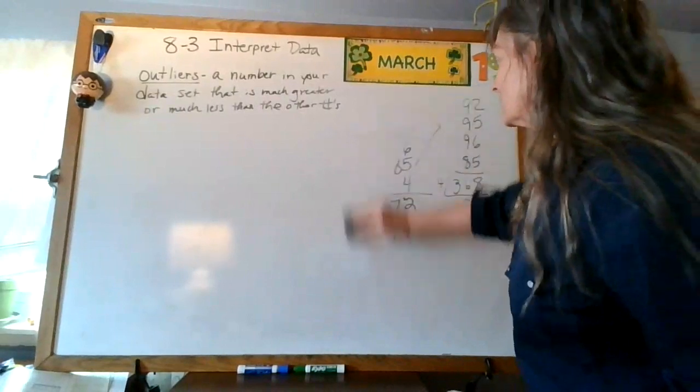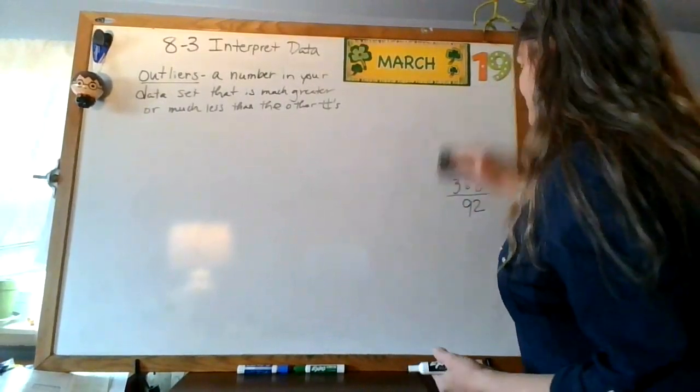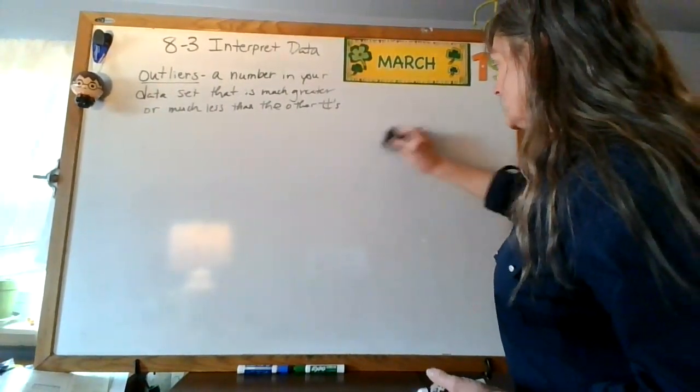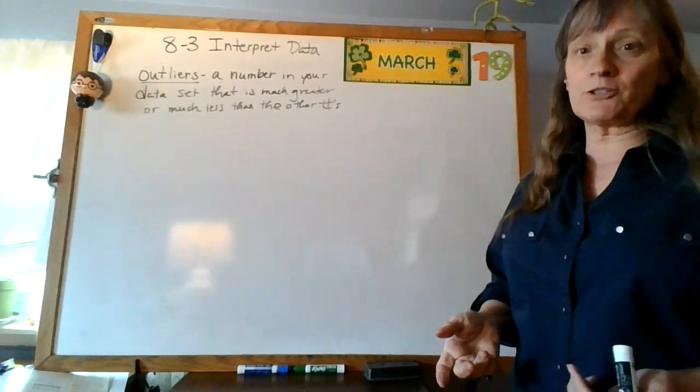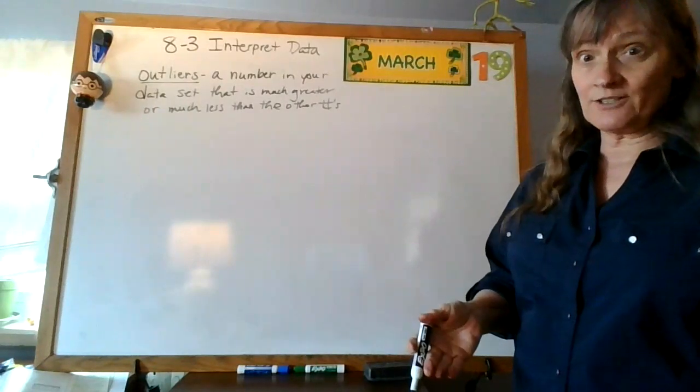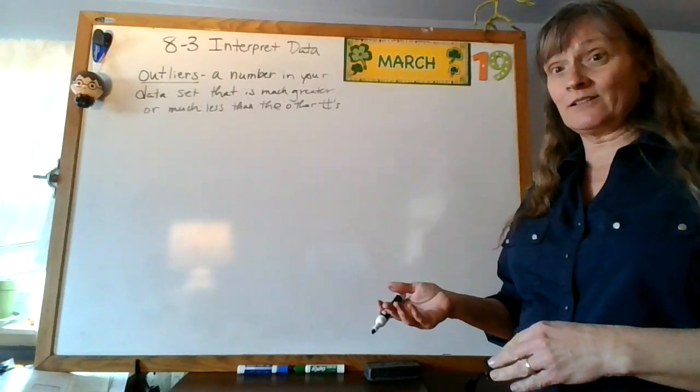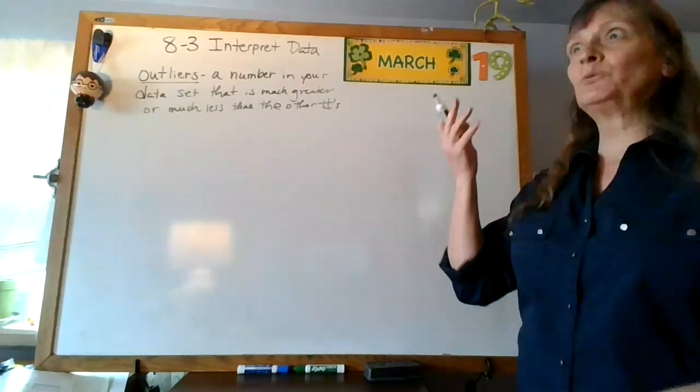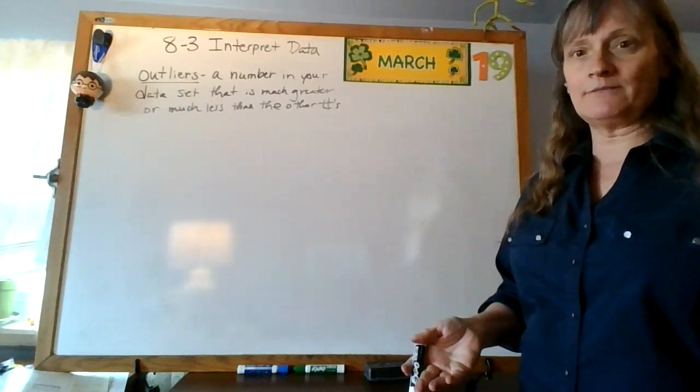So, it's important to know about outliers, and for this very reason, we're going to be finding measures of central tendency with the outliers and without the outliers, and then that's going to really tell us what's going on.